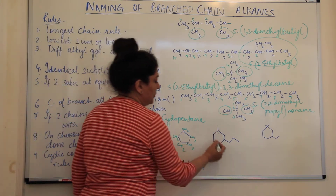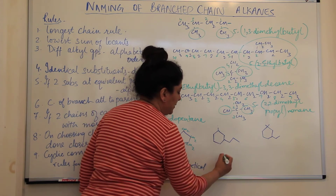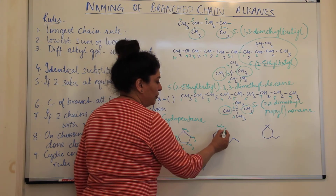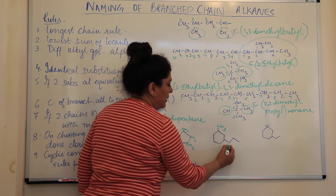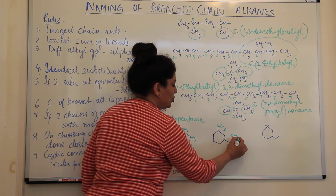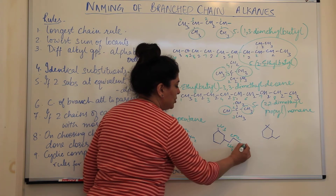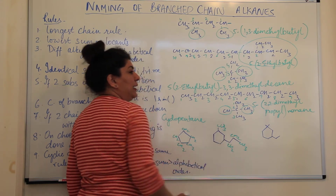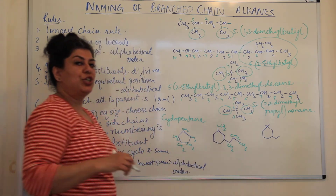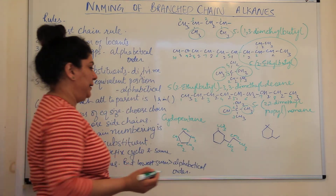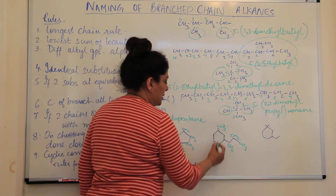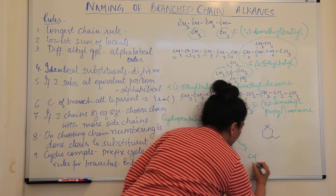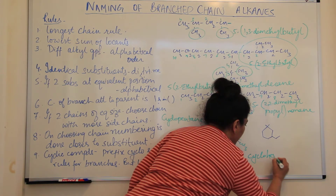This next compound is a cyclohexane with substituents. It has a methyl group and a CH₂CH₂CH₃ group — that is, a propyl group. Between methyl and propyl, methyl comes first alphabetically, so we name it starting from the methyl carbon. This is a methylpropylcyclohexane.